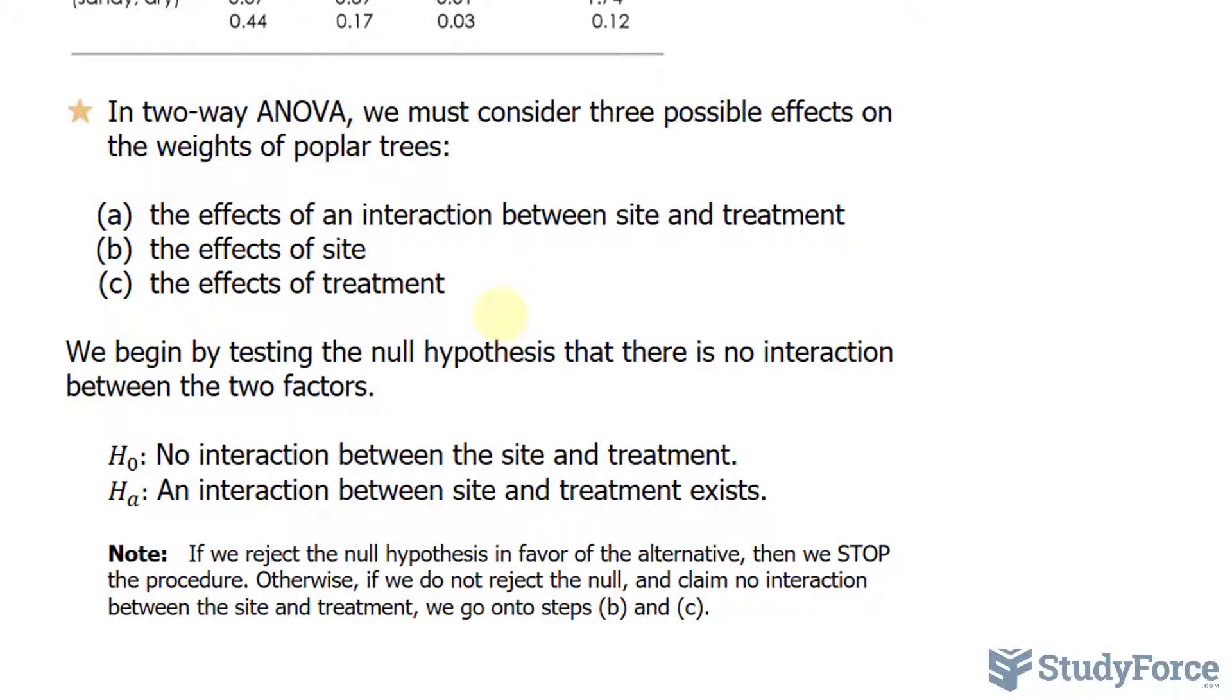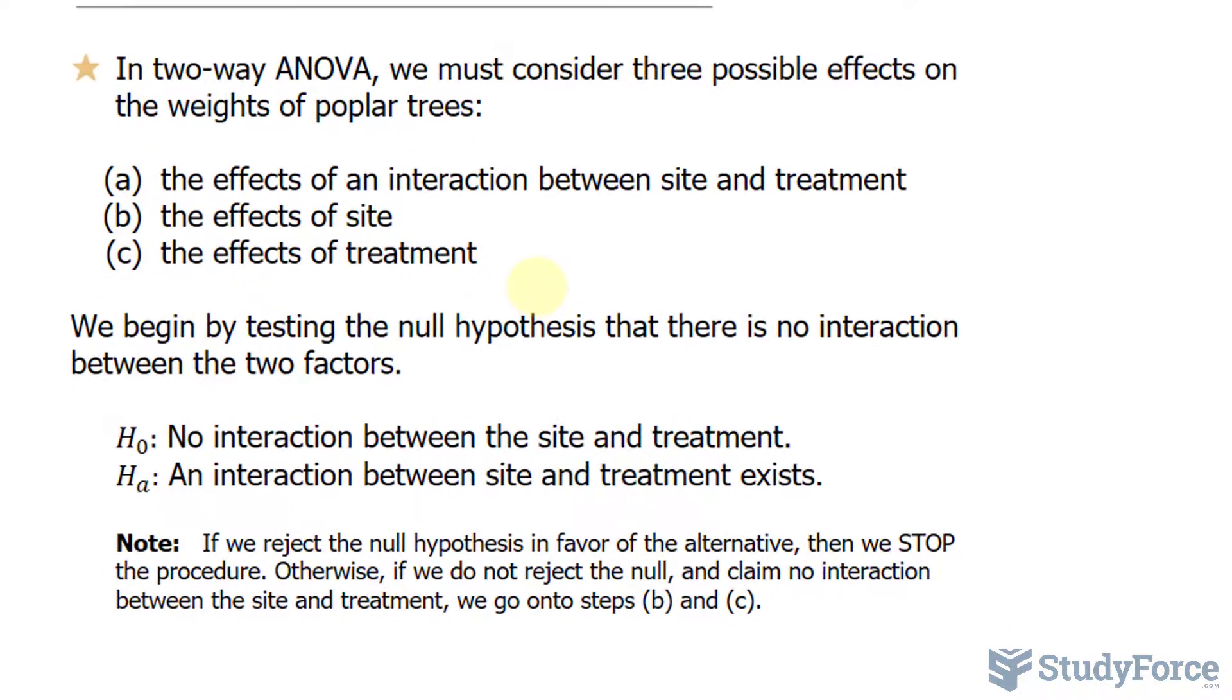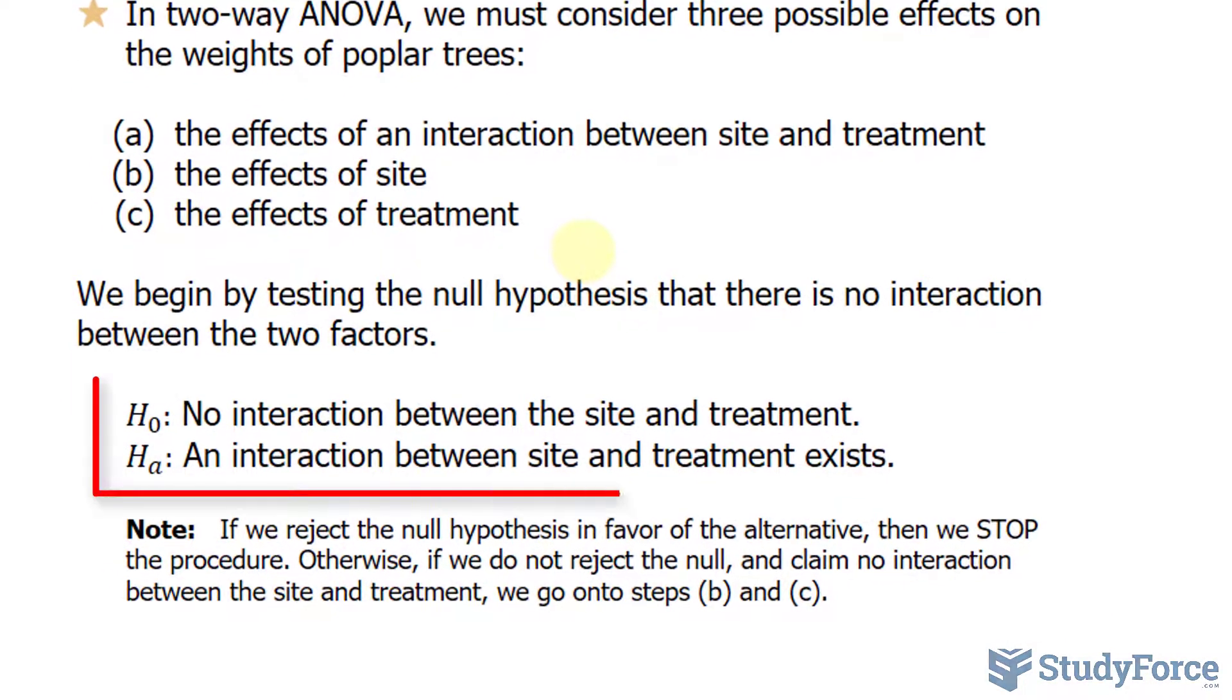In a two-way ANOVA, we must consider three possible effects on the weights of these poplar trees. The first and most important being the effects of an interaction between site and treatment. Then the effects of site and the effects of treatment. The reason why interaction is most important is because depending on the results, it dictates whether we continue the test or not.